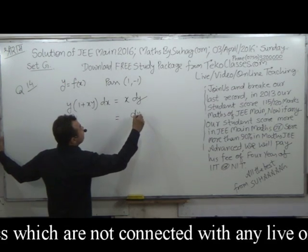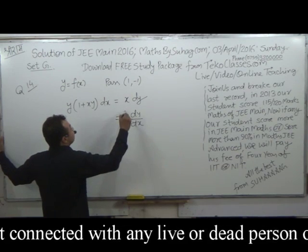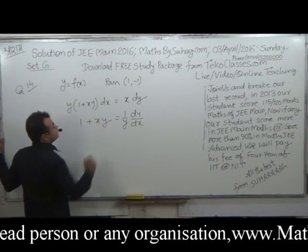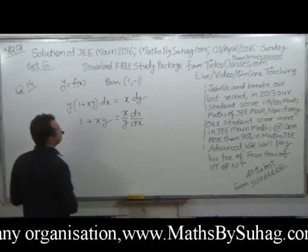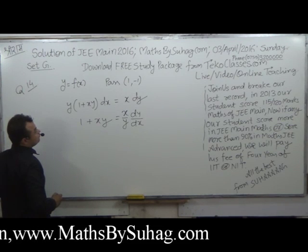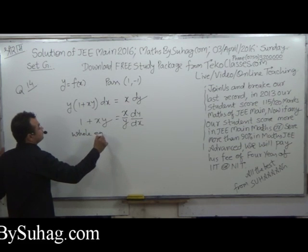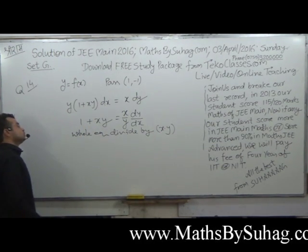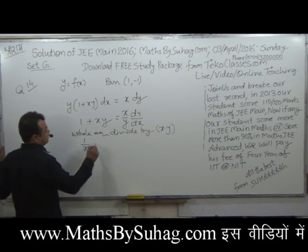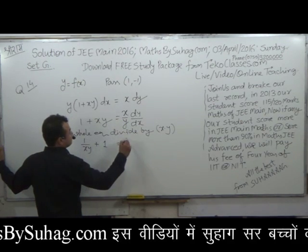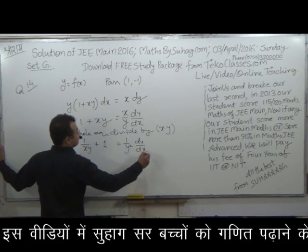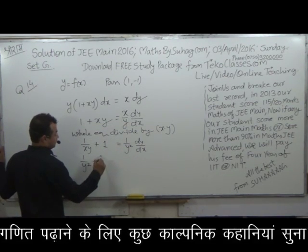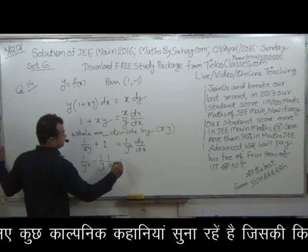देखे, dy/dx और 1 upon y इधर नीचे आया. तो (1 + xy) को whole equation divided by x·y किया. तो 1/(xy) + 1 is equal to x कट गया, 1/y² · dy/dx. तो 1/y² ये उठके उधर गया, minus 1/y · 1/x is equal to 1.